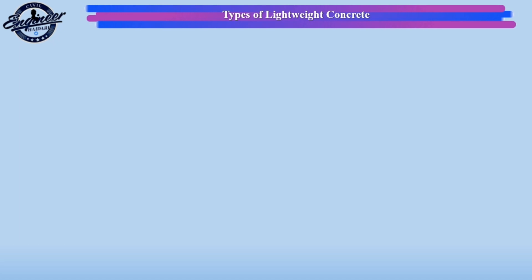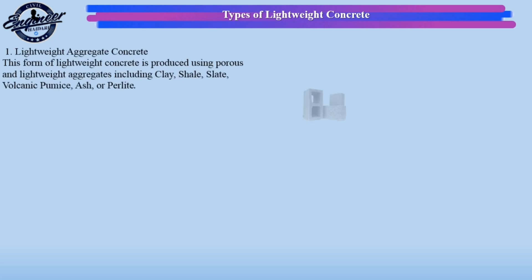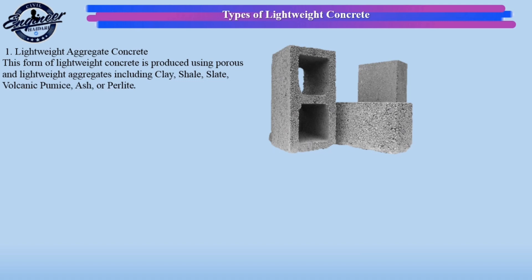Type 1: Lightweight aggregate concrete. This form of lightweight concrete is produced using porous and lightweight aggregates including clay, shale, slate, volcanic pumice, ash, or perlite.